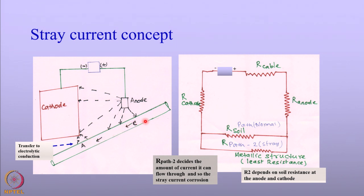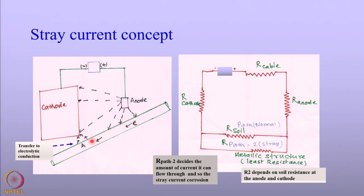The current enters the pipeline and travels along it. The metallic structure has the least resistance compared to the resistance offered by the soil, so the current easily flows along the metallic structure through electronic conduction. This current flow cannot continue forever, because the current has to go back to the circuit and to the rectifier. When the current travels close to the vicinity of the buried structures, the current tries to leave the structure and enters the soil, from where it enters the intended cathodically protected structure and then goes back to the rectifier.